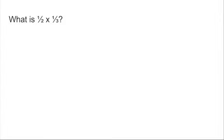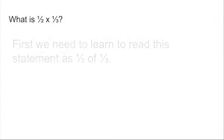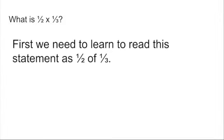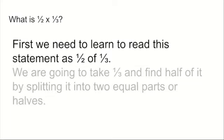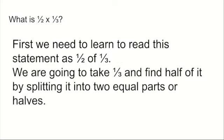First example: what is one half times one third? Well, first we need to read this statement as one half of one third, because it often makes more sense — a half of one third. So we're going to take one third and find half of it by splitting it into two equal parts.